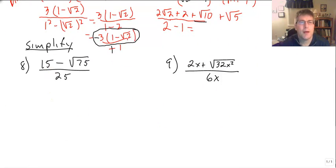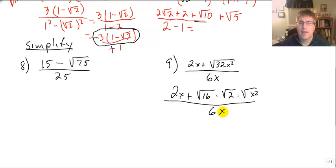Couple more sample problems that you'll have. You'll be asked to simplify these. I think I'm going to do number 9. I'll save number 8 for you to bring to class. So let's go ahead and simplify our numerator here. We have 2x plus, well the square root of 32 is the square root of 16 times the square root of 2 times the square root of x squared all over 6x.